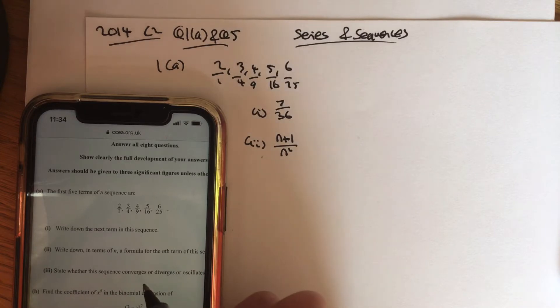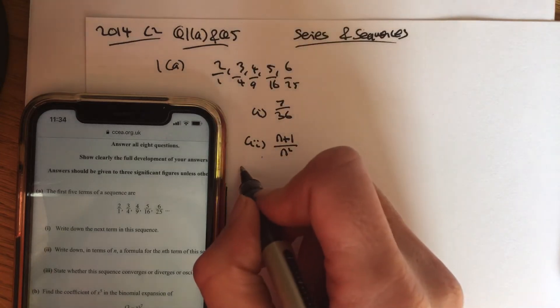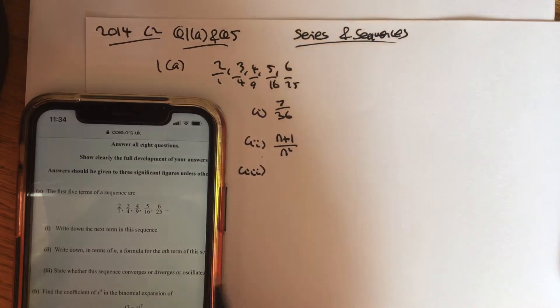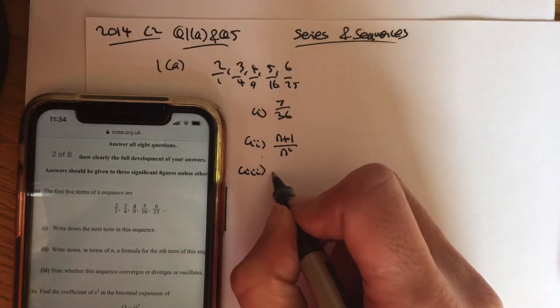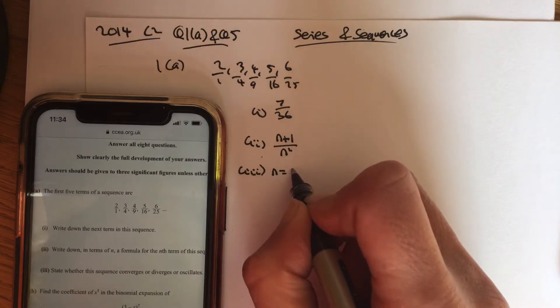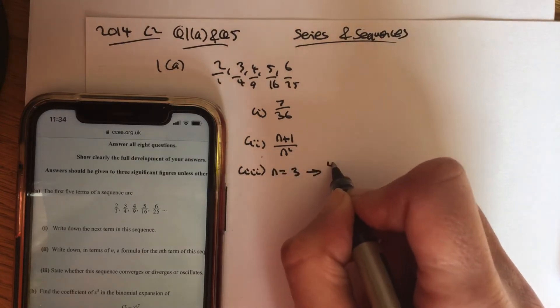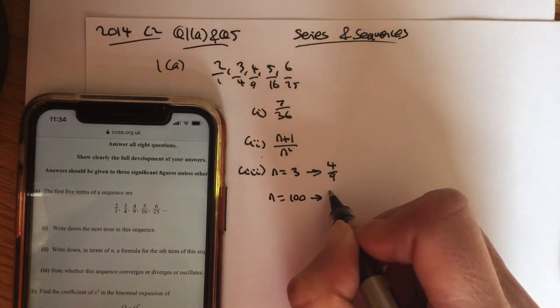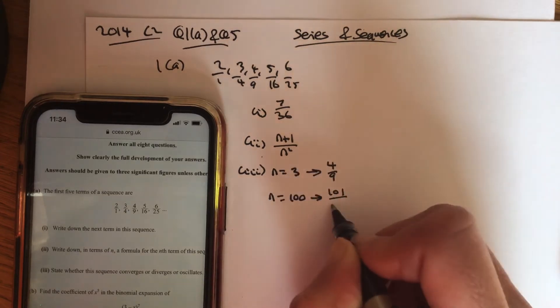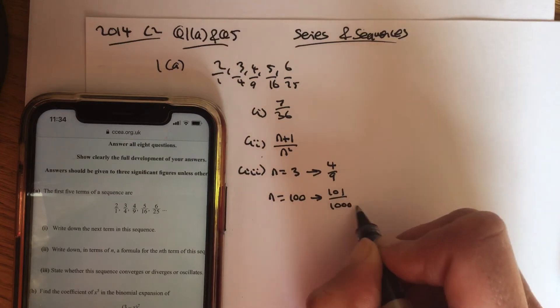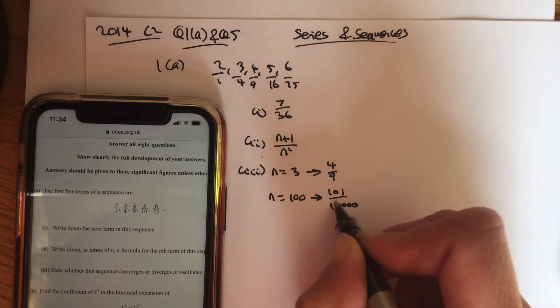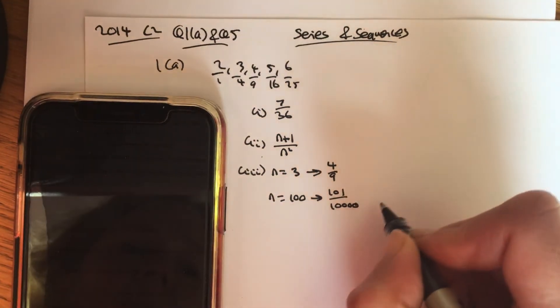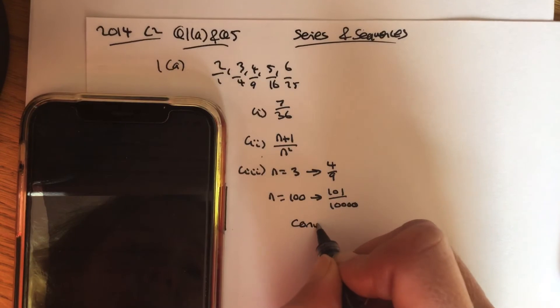Part 3. State whether it converges, that means it goes to one number, diverges, which means it gets further apart, or oscillates. So if you put in, say, n equals 3, you get 4 over 9. If you put n equals 100, you get 101 over 100,000. So what is happening there, the number is getting smaller and smaller and smaller each time. So it converges.